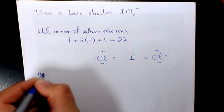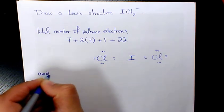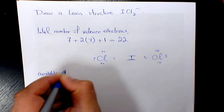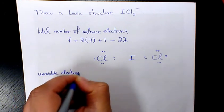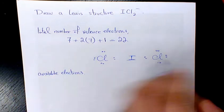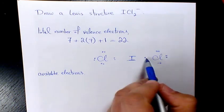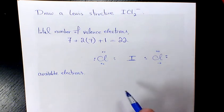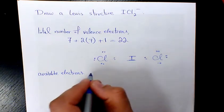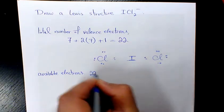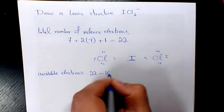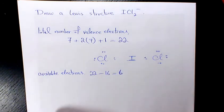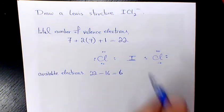Now we need to check how many electrons we have available. That's 1 2 3 4, 1 2 3 4 — 8 times 2 is 16. So we have 22 minus 16, meaning we need to place six more electrons.